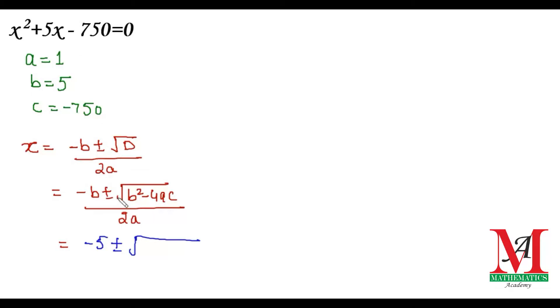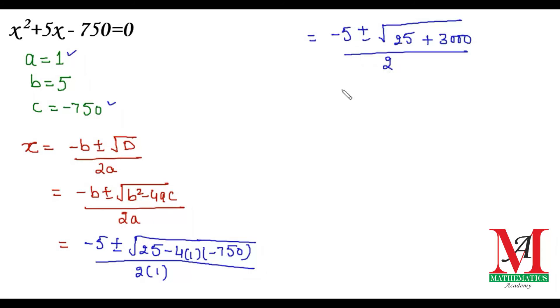The square of 5 is 25. Then 25 - 4(1)(-750): minus times minus is plus, and 4 times 750 is 3000. So we get -5 ± √(25 + 3000), divided by 2. Adding 25 and 3000, we get 3025. Therefore, x = (-5 ± √3025)/2.